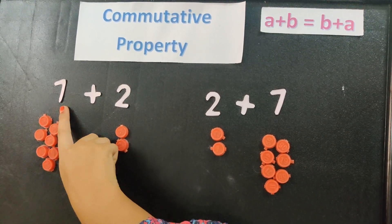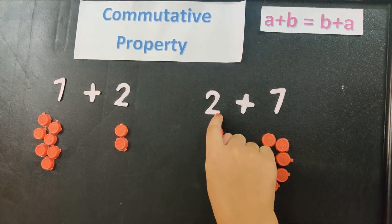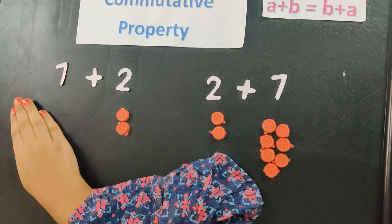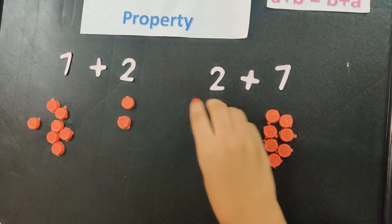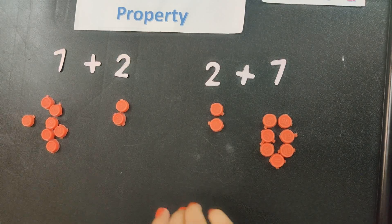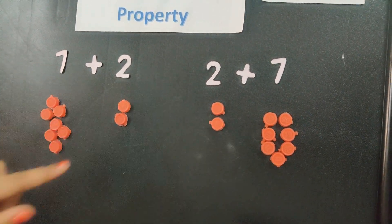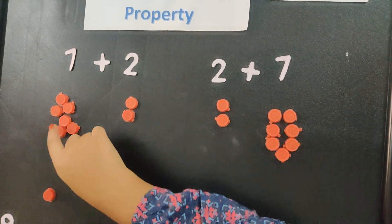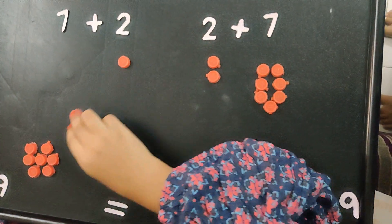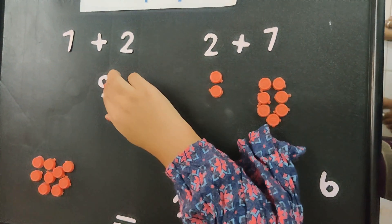First addend is 7 and second addend is 2. First addend is 2 and second addend is 7. I took 7 coins and 2 coins. Now let's add 7 plus 2 with these coins: 1, 2, 3, 4, 5, 6, 7, 8, 9. So 7 plus 2 is equal to 9.